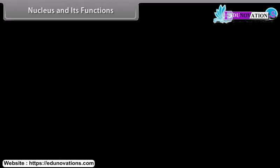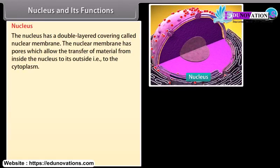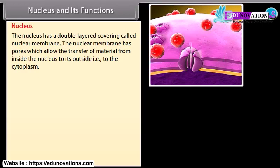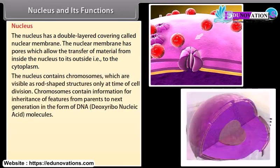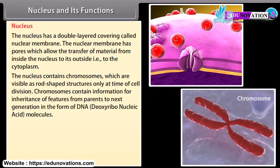The nucleus has a double-layered covering called the nuclear membrane. The nuclear membrane has pores which allow the transfer of material from inside the nucleus to its outside, that is, to the cytoplasm. The nucleus contains chromosomes, which are visible as rod-shaped structures only at the time of cell division. Chromosomes contain information for inheritance of features from parents to the next generation.